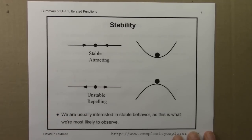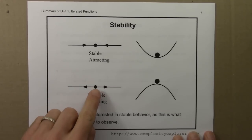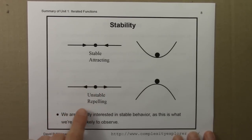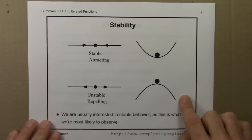And here's an unstable fixed point. Here's a fixed point. Nearby orbits are pushed away from it. It's unstable or repelling. This picture can help us think about it.